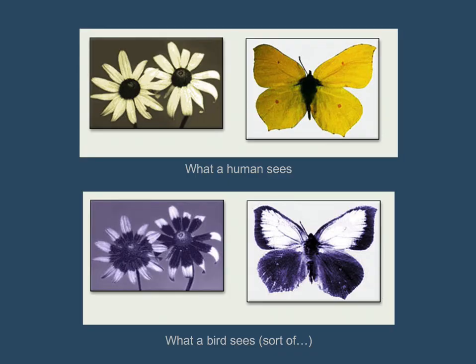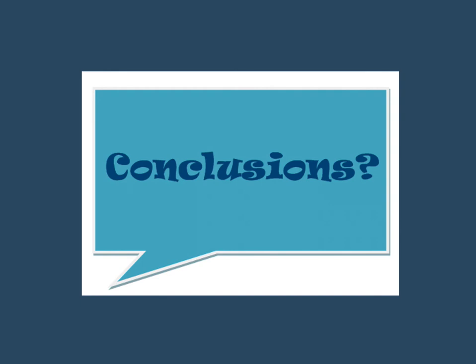Going back to bees, butterflies, and birds — what a human might see would be something like this, whereas someone who can see ultraviolet would see different patterns along the edges of leaves or different patterns on wings. We don't know what colors these are, but we have ultraviolet cameras that can detect them and take pictures, though this is not actually what those animals are seeing.